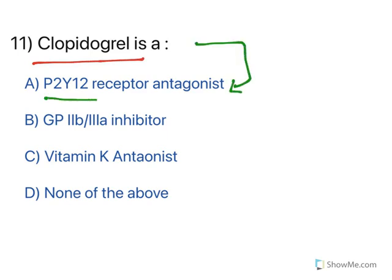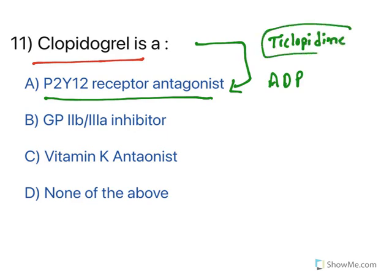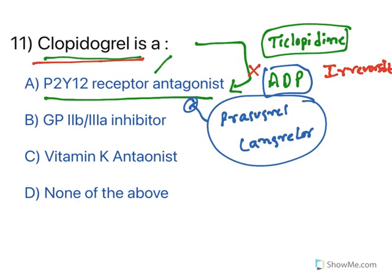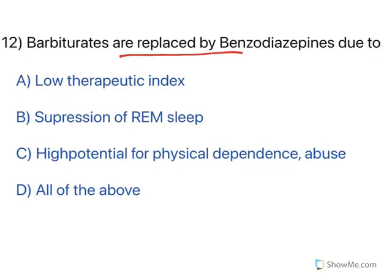Clopidogrel is a P2Y12 receptor antagonist. These are ADP receptors. Clopidogrel and ticlopidine are thienopyridine derivatives that inhibit these receptors irreversibly, causing irreversible inhibition. Prasugrel and cangrelor inhibit the same receptors but in a reversible manner. For this question, clopidogrel is a P2Y12 receptor antagonist — an ADP receptor. Option A is correct.